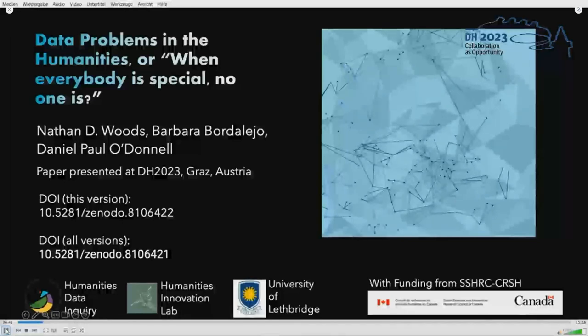Since at least the turn of the 21st century, we've heard talk of the data problem faced by humanities researchers, at one and the same time defined as a problem of scholarly method, of research policy, and of research infrastructure development.